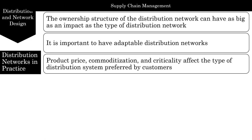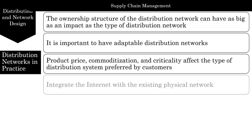For high-value, specialized, or critical products, customers are willing to have a relationship solely around that particular product. For low-value, commoditized products like office supplies, most customers prefer a one-stop shop. While a customer is willing to order laptops directly from Dell or Apple, they prefer to deal with a stationery supplier when looking for pens, paper, or staplers. Apple has been successful with stores selling only Apple products, but it is highly unlikely that a stapler manufacturer could replicate that success.